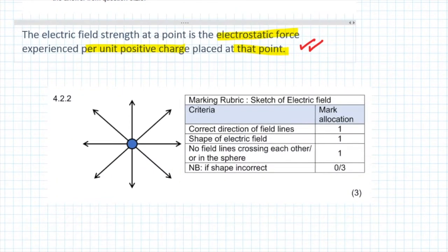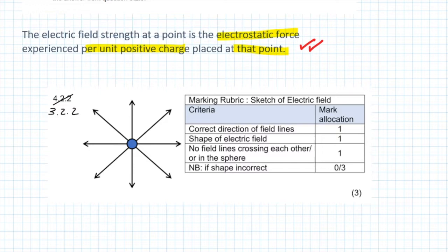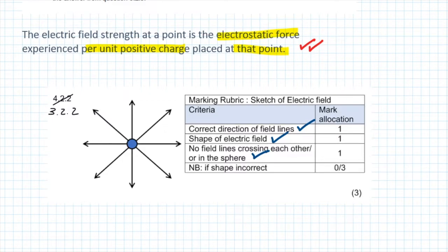Based on that, the correct diagram you should draw for 3.2.2 is the one displayed on the screen. The mark allocation is as follows: you're going to get one mark for the correct direction — that is away from the charge — one mark for the correct shape, so straight lines going out of the charge perpendicular to the surface of the charge. Lastly, you're going to get a mark for ensuring that no field lines cross each other or go into the sphere. If the shape is incorrect, you're going to get 0 out of 3.